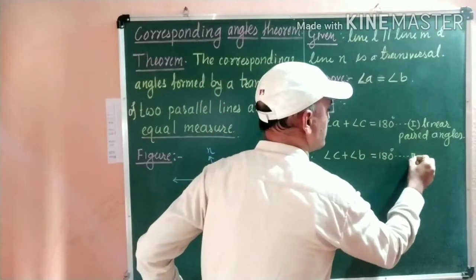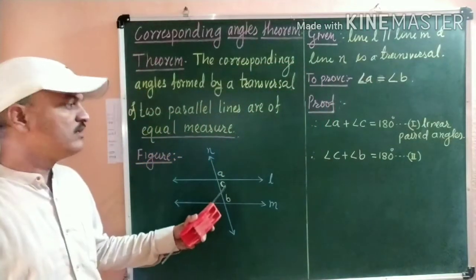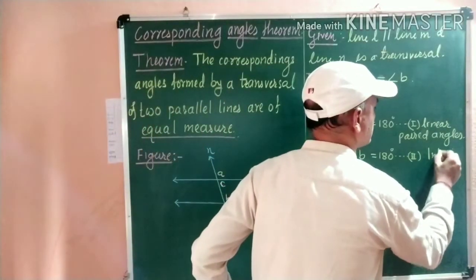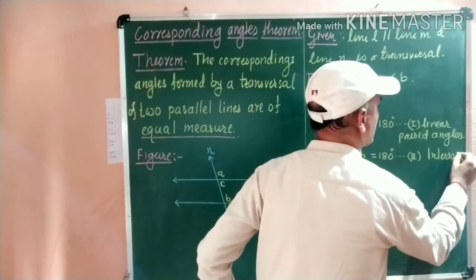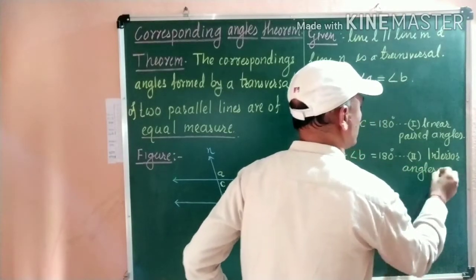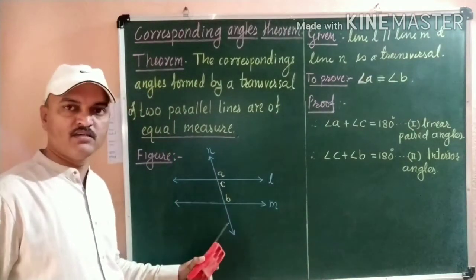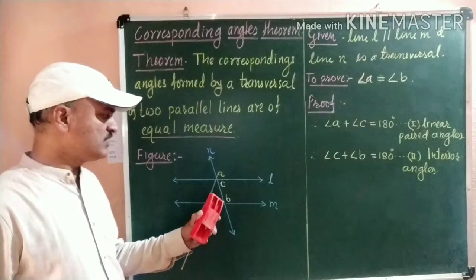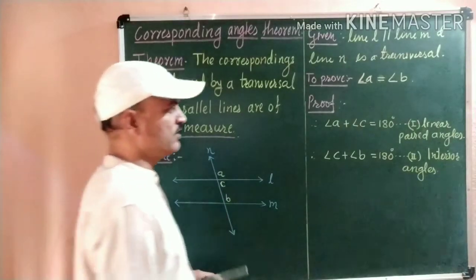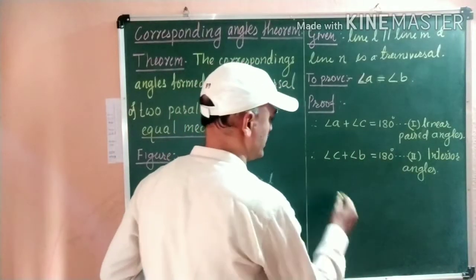Also, we know that angle C plus angle B is equal to 180 degrees. This is statement two. What is the reason? They are linear angles. In the previous property, we studied that when two parallel lines are intersected by a transversal, the interior angles formed are supplementary. Therefore, angle C plus angle B equals 180 degrees.